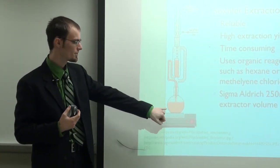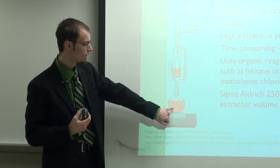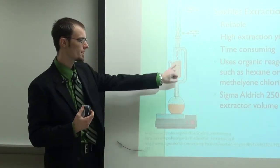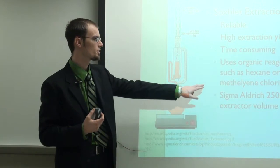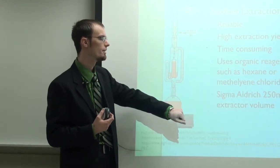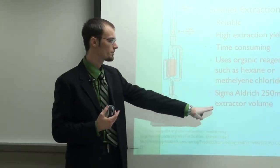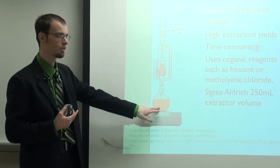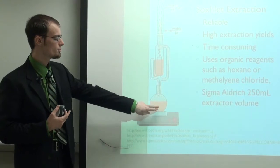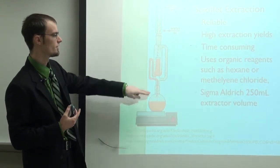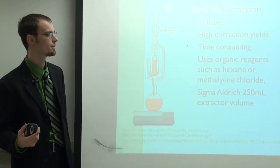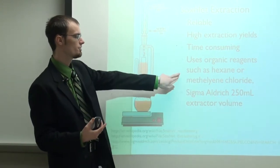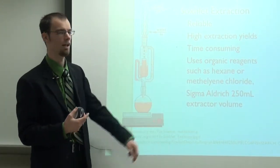But what is important to note is all of this orange represents organic solvents, such as hexane or methylene chloride. So, in order to run this, typically, Sigma-Aldrich sells them, their most common is a 250 milliliter. So, you're using 250 milliliters of solvent in this system per extraction. So, using these two, you're going to generate a lot of waste.